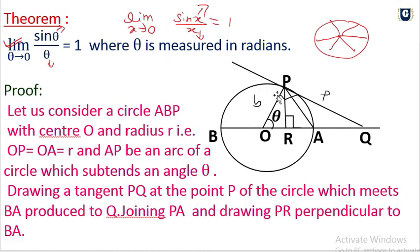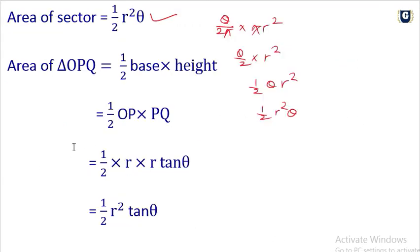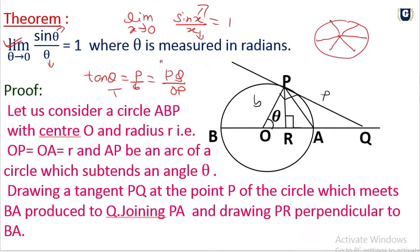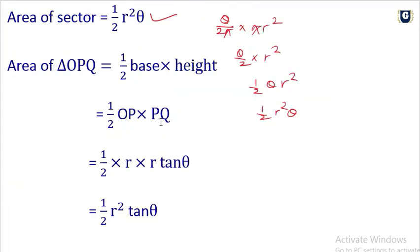Area of triangle OPQ equals one half times base OP times height PQ. Tan theta equals PQ by OP, so PQ equals OP times tan theta. Since OP equals R, PQ equals R tan theta. So area of triangle OPQ equals one half times R times R tan theta equals one half R squared tan theta.